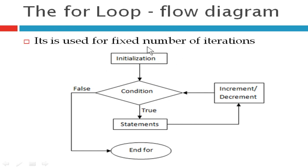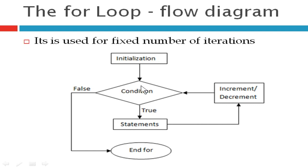In the flow diagram, you will have an initialization statement, after which it will go to the condition. If the condition is true, it enters the body of the loop. After executing the body of the loop, it will go to the increment or decrement statement. It increases or decreases the value and again goes back to the condition, checking whether it is true or false. If true, it continues executing the statements inside, repeating until the condition becomes false. Once it becomes false, it comes out of the loop.